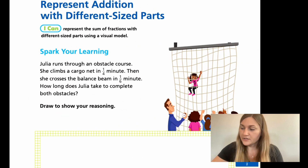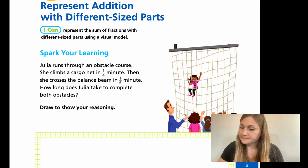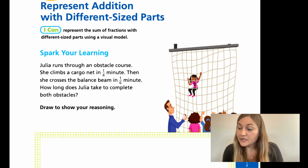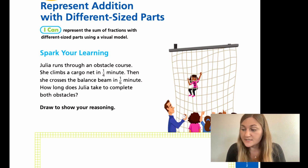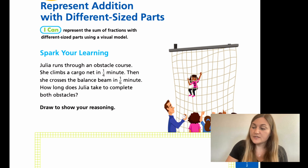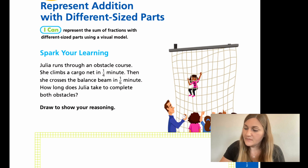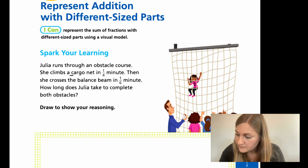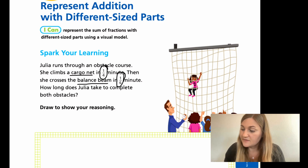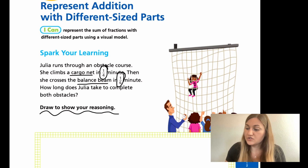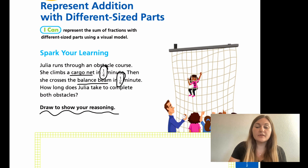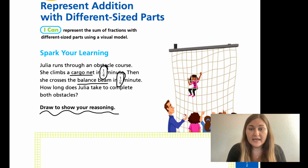Moving on to page 133 in your book. The Spark Your Learning starts with a word problem: Julia runs through an obstacle course. She climbs a cargo net in one-fourth of a minute, then she crosses the balance beam in one-sixth of a minute. How long does Julia take to complete both obstacles? We have Julia right here in the net. The cargo net takes her one-fourth of a minute and the balance beam takes one-sixth of a minute. The most important thing here says draw to show your reasoning — remember the I can is: can we use visual aids to help us?